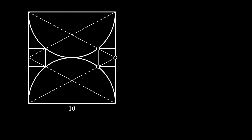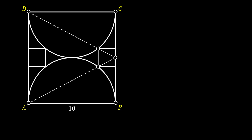First, I will simplify the image a little bit and focus only on the rectangle on the right, since those two rectangles are identical. Next, I will label all the vertices of our big square as A, B, C, and D, and I will also label all the vertices of the small rectangle as P, Q, R, and S. And finally, let's label the midpoint of our right side of the square as M.